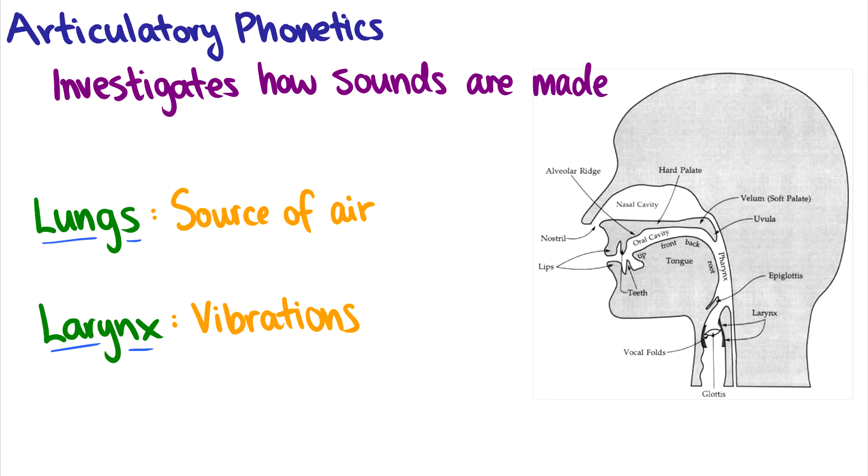You'll also see on this diagram some other things. For instance, the vibrations occur here in the larynx. Below the larynx is the lungs. But above all that, you have the oral cavity and the nasal cavity. So you can have air that goes through your nose or you can have air that goes through your mouth. So there's two different ways that air can escape our heads to make sounds. And we'll talk about all these parts specifically when we go over consonants and vowels.